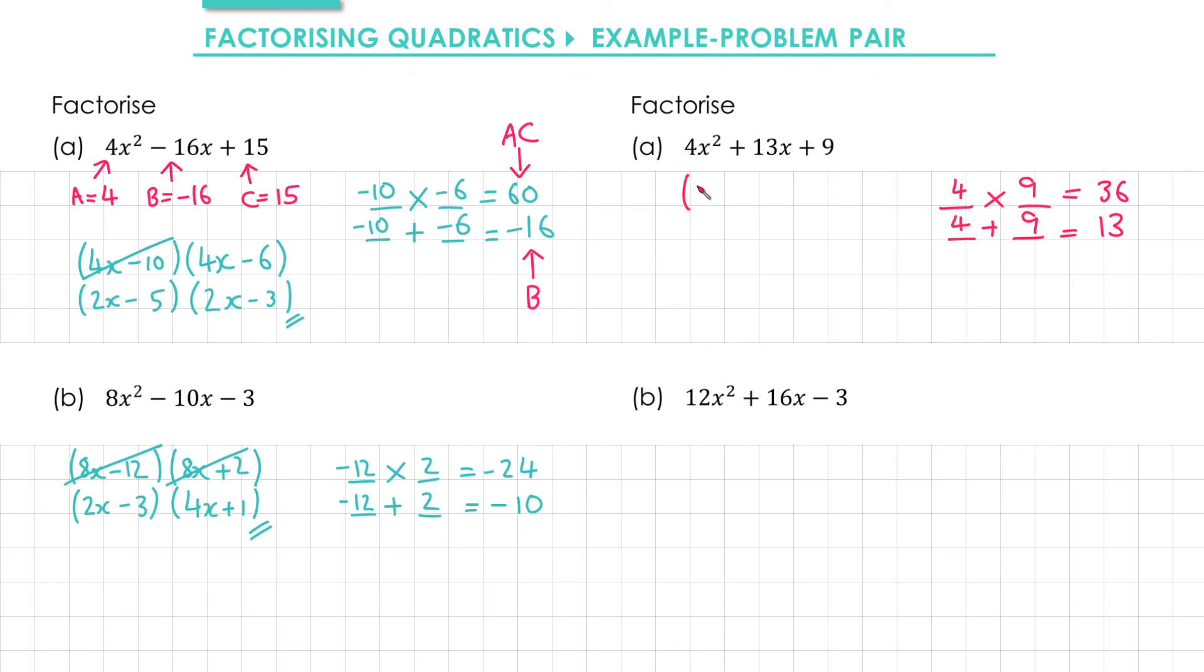Initially in the brackets, we'll put 4x, and we have positive 4 and positive 9. We need to cancel out a factor of 4. In the first bracket, we can divide the whole thing by 4, so we end up with x plus 1.